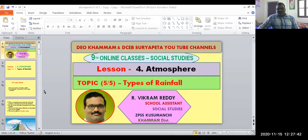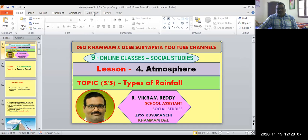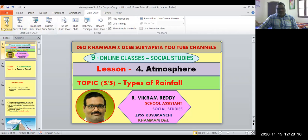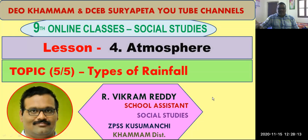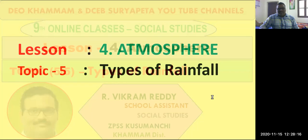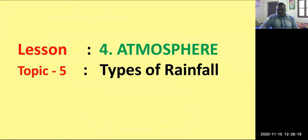Good morning, dear colleagues and my dear students. This is Vikram Reddy, School Student Arts at ZPSS Kuzmanchi Kamam district. We are in the lesson atmosphere and we shall conclude the lesson today. We are discussing about the types of precipitation and types of rainfall. We already discussed about one type of rainfall, that is convectional rainfall. Today, we shall discuss about the other two types of rainfall.